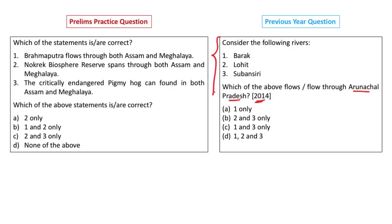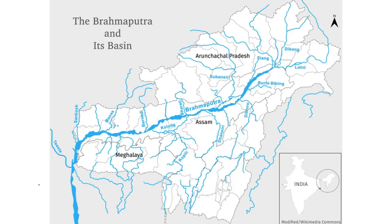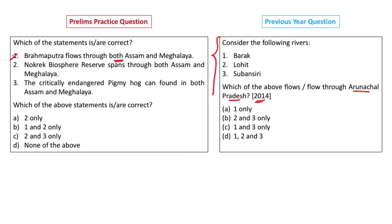Before I read each statement, you should be able to determine true or false in your mind. Statement 1: Brahmaputra flows through both Assam and Meghalaya. Meghalaya lies in the Brahmaputra River Basin and its tributaries flow through Meghalaya, but the Brahmaputra itself does not flow through Meghalaya — it just touches the border. The Brahmaputra flows through Arunachal Pradesh, Assam, and into Bangladesh. So this statement is incorrect.